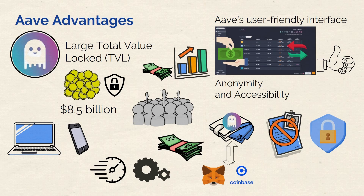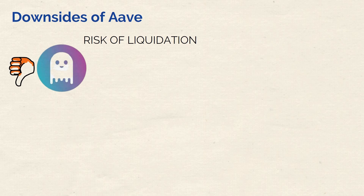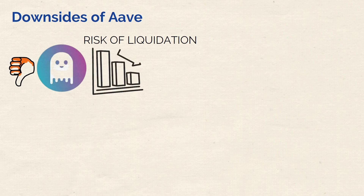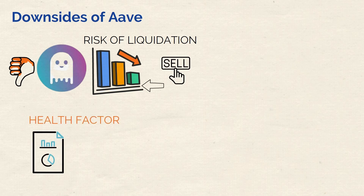Of course, it isn't all roses for the platform. Despite its strengths, Aave also has a few drawbacks. The first downside is the risk of liquidation. As with any DeFi platform that uses over-collateralization, the risk of liquidation is always going to be there. If your collateral's value drops below a certain level, Aave will liquidate or sell your assets to cover any losses. Luckily, Aave has tools like the Health Factor for its deposits, which can help users monitor and manage this risk.